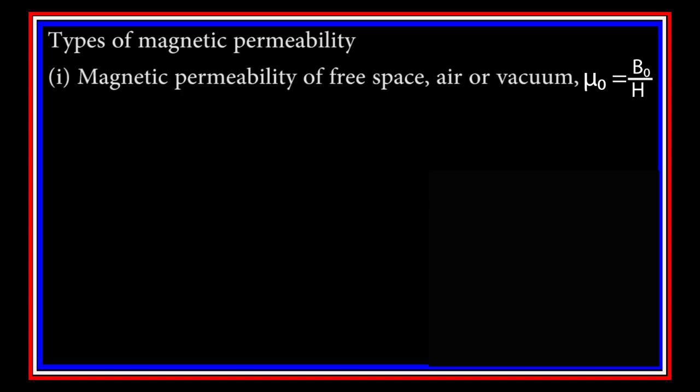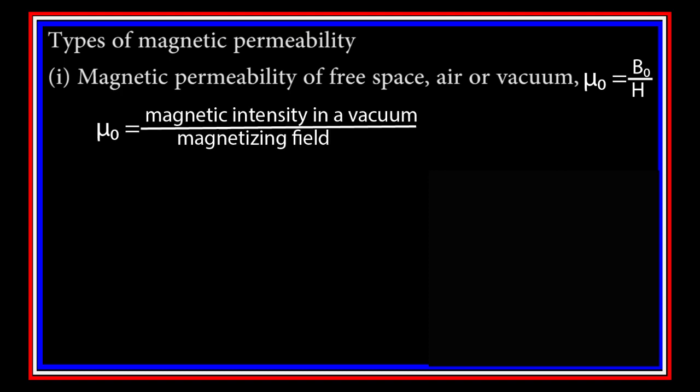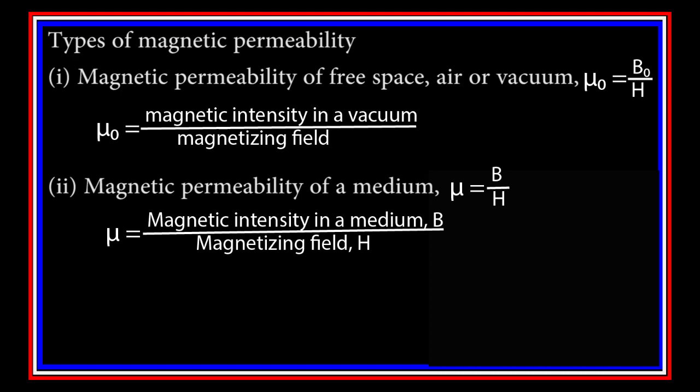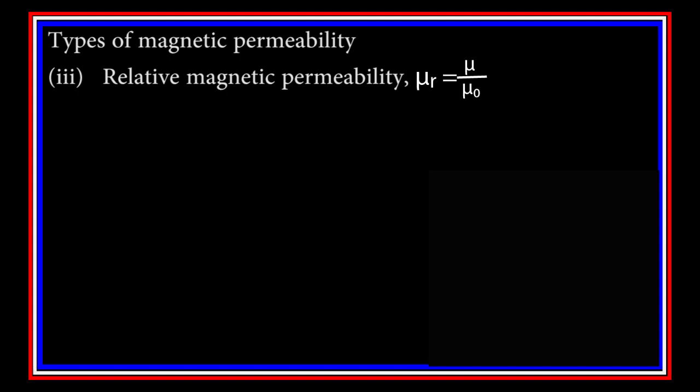Types of magnetic permeability. One: magnetic permeability of free space, air, or vacuum, represented by mu-naught equal to B-naught over H, or the ratio of magnetic intensity in vacuum to the magnetizing field. Two: the magnetic permeability of a medium, represented by mu equal to B over H, or the ratio of magnetic intensity in the medium to the magnetizing field. Three: relative magnetic permeability, mu-R, is equal to mu over mu-naught.